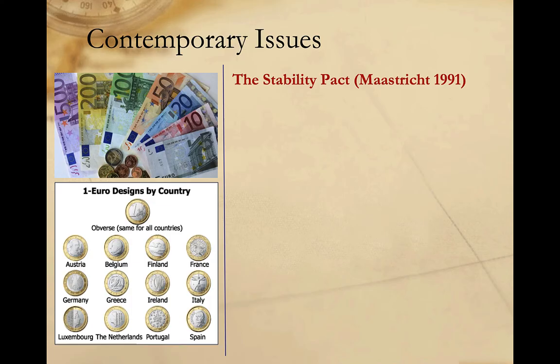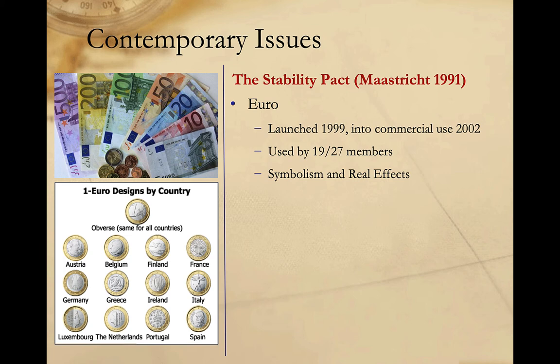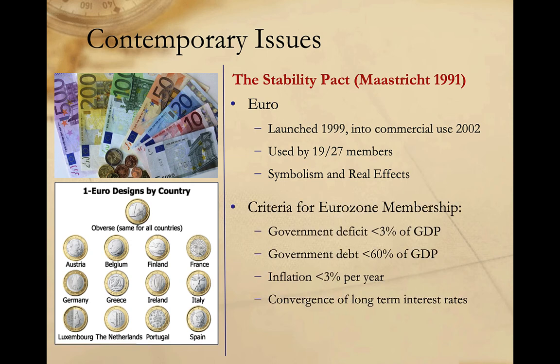A second area of concern focuses on the eurozone. The euro is the currency used in most of the European Union. Created in 1991 under the Maastricht Treaty, the euro was launched in 1999 and introduced into commercial use in 2002. Today, it's the official currency of 19 of the 27 EU member states. To join the eurozone, states must agree to a series of policies intended to ensure currency stability, including keeping government deficits at less than 3% of GDP, keeping debt at less than 60% of GDP, keeping inflation at less than 3% a year, and working towards the convergence of long-term interest rates. A country failing to meet these targets can be expelled from the eurozone, though to date none have been.